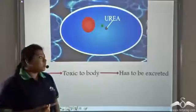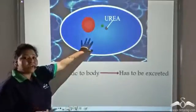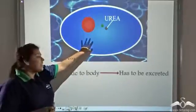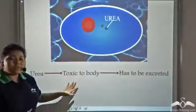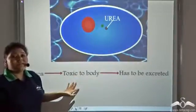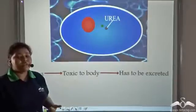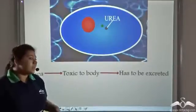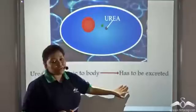Urea formed during cellular digestion in the cells is very toxic to the body. Its presence can cause harm to the body, so it needs to be excreted.